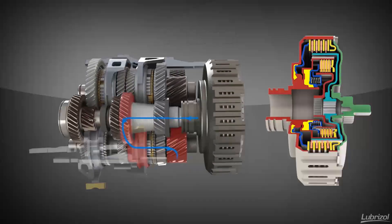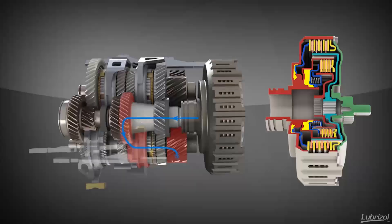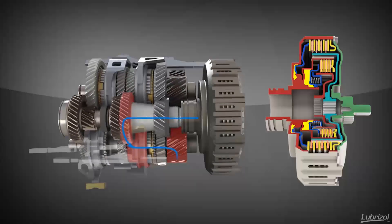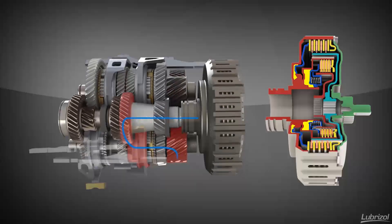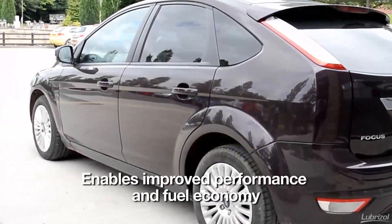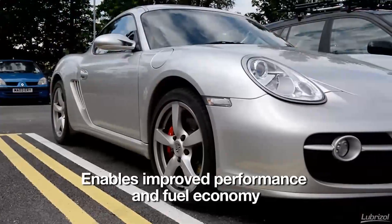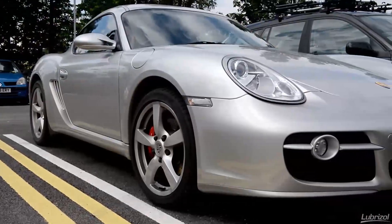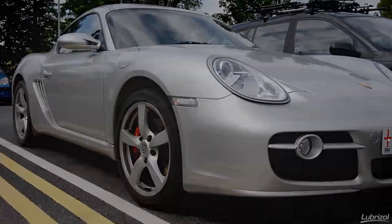The innovative dual-clutch design and precise control that has been demonstrated allow for much quicker gear changes than manual or planetary automatic transmissions. This enables improved performance and fuel economy, which will make dual-clutch transmissions a continued option for future drivetrains.